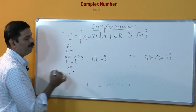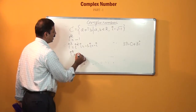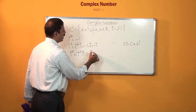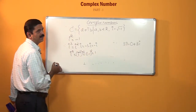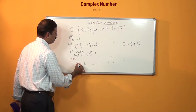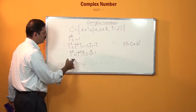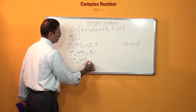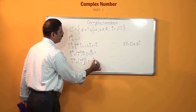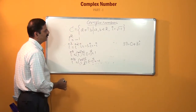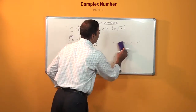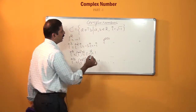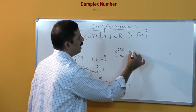Similarly, i to the power 4 equals i squared whole square, which is minus 1 squared, equal to 1. If we take i to the power 10, that equals i squared to the power 5, which is minus 1 to the power 5, equal to minus 1. For i to the power 250, we write it as i squared to the power 125, which equals minus 1 to the power 125.